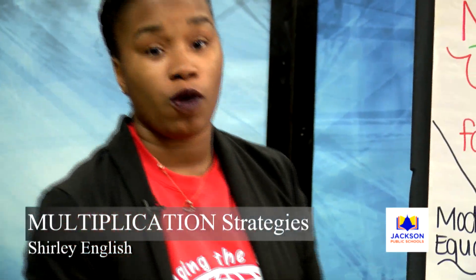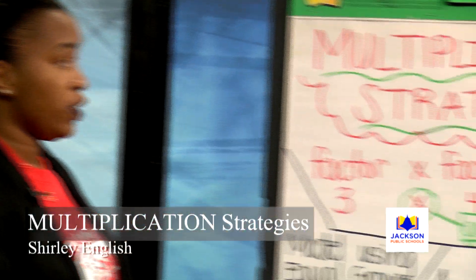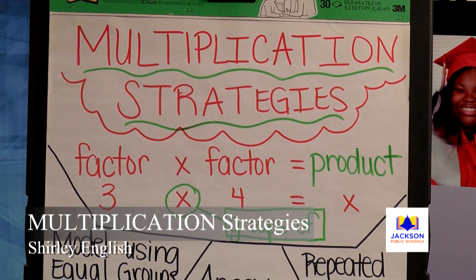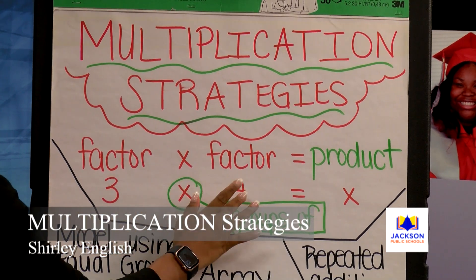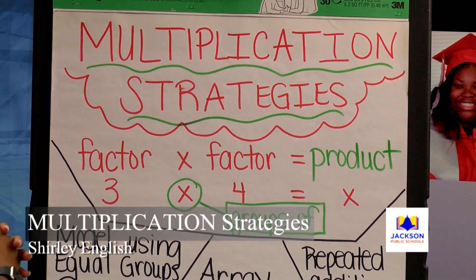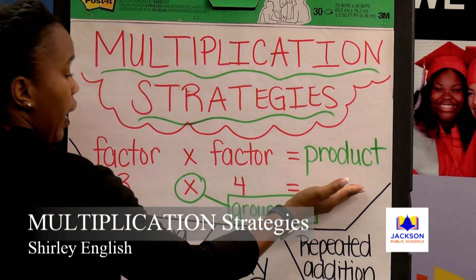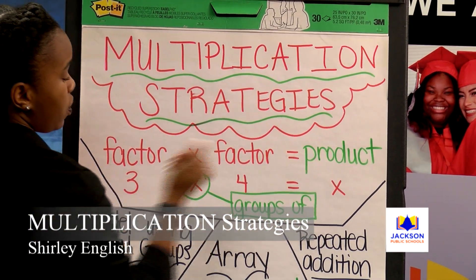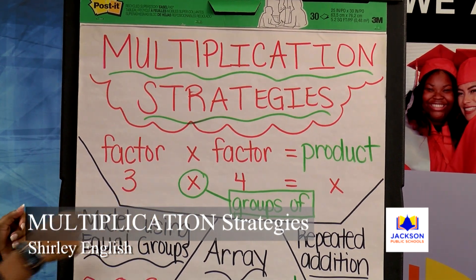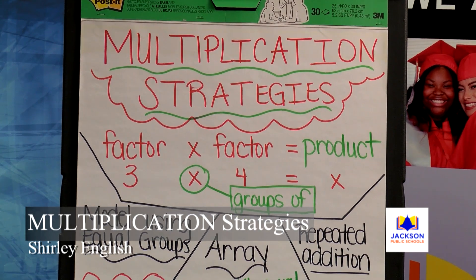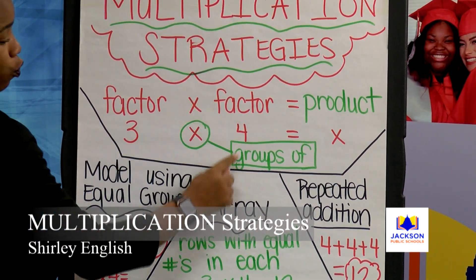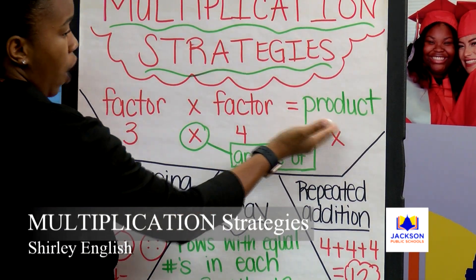The first thing that we're going to go over are the vocabulary words. When you are talking about multiplication strategies, you need to know that you're always normally working with two numbers. These two numbers are called factors. When you multiply the two numbers, you get your answer, which becomes your product. The multiplication symbol actually means 'groups of,' so three groups of four will give me my product.